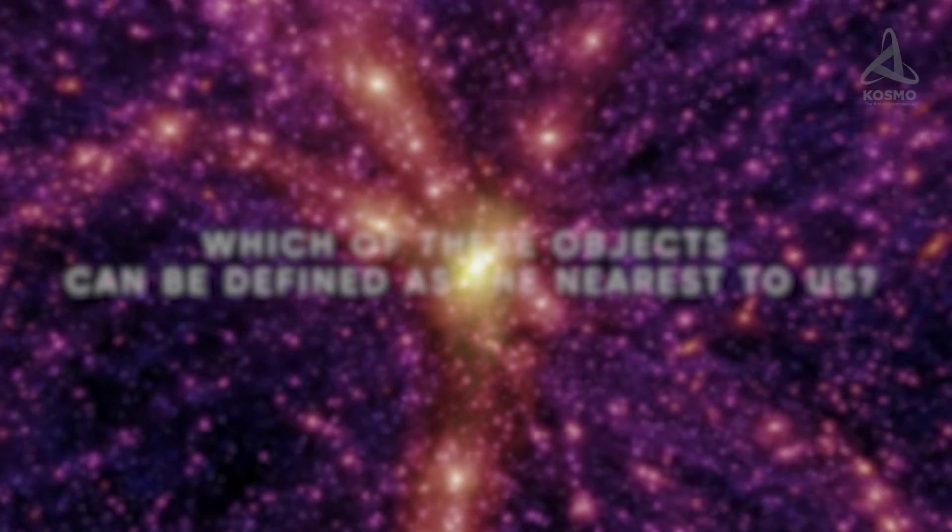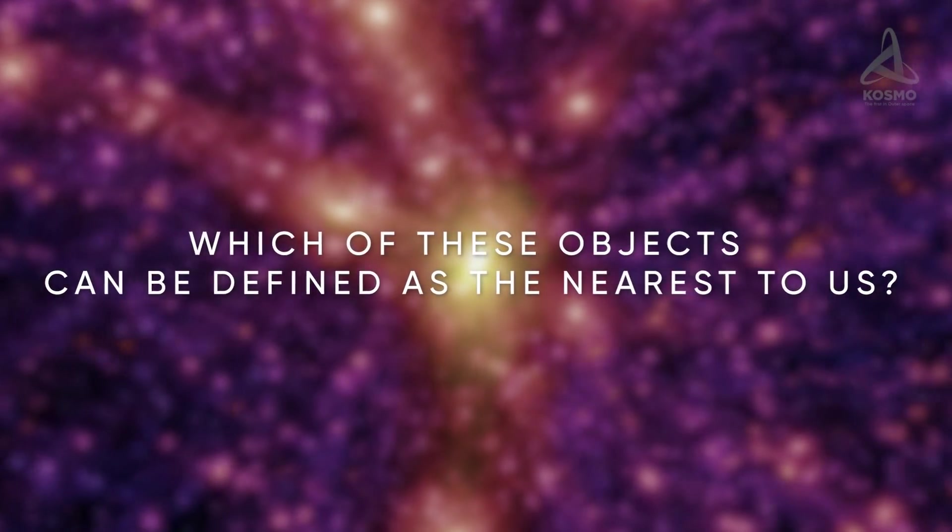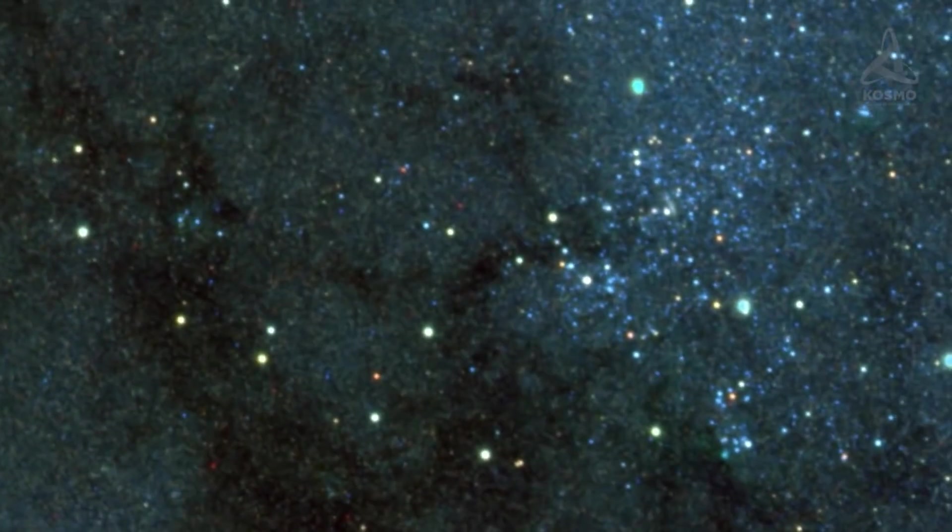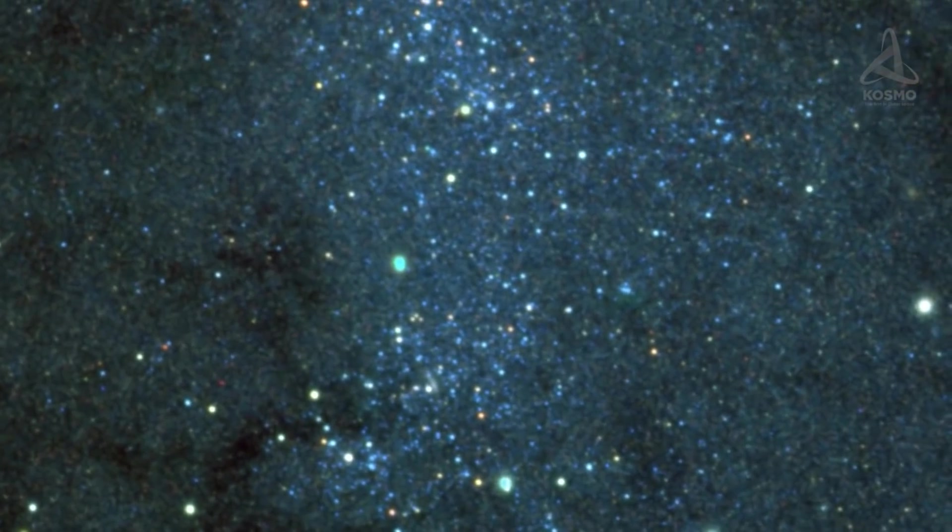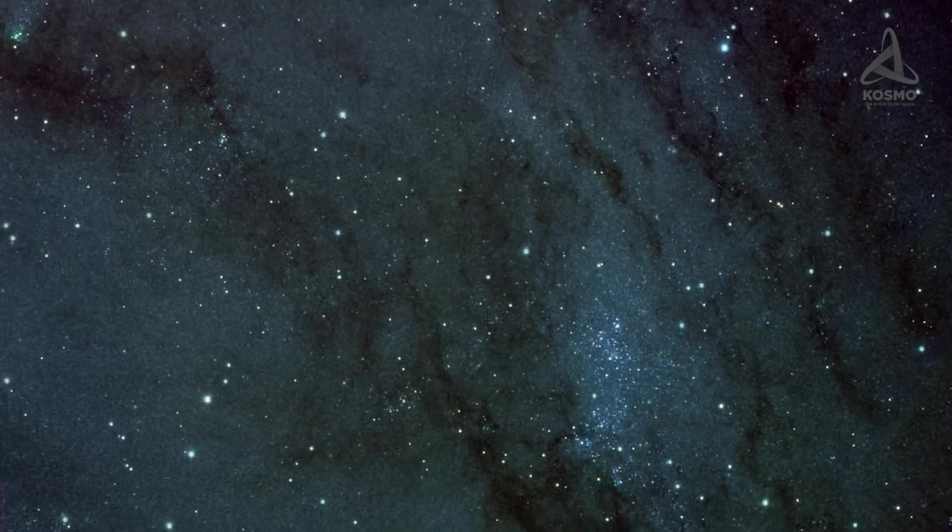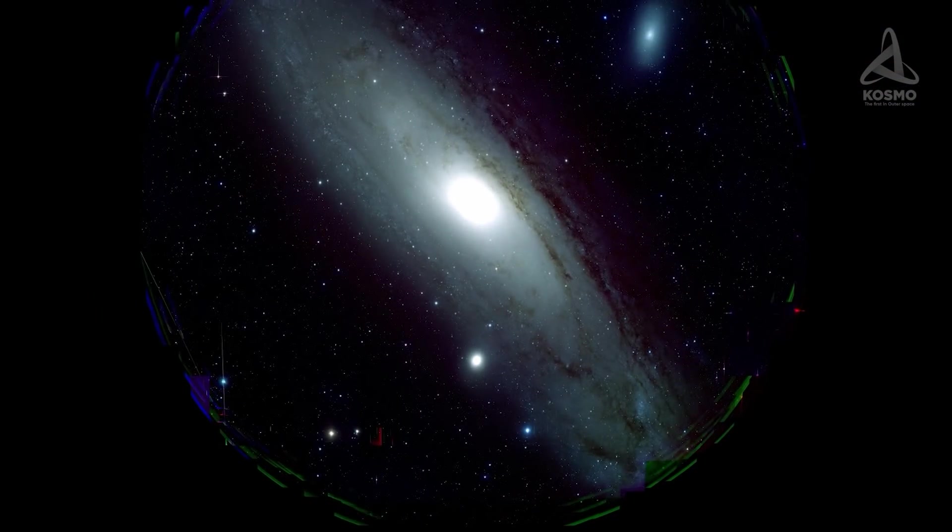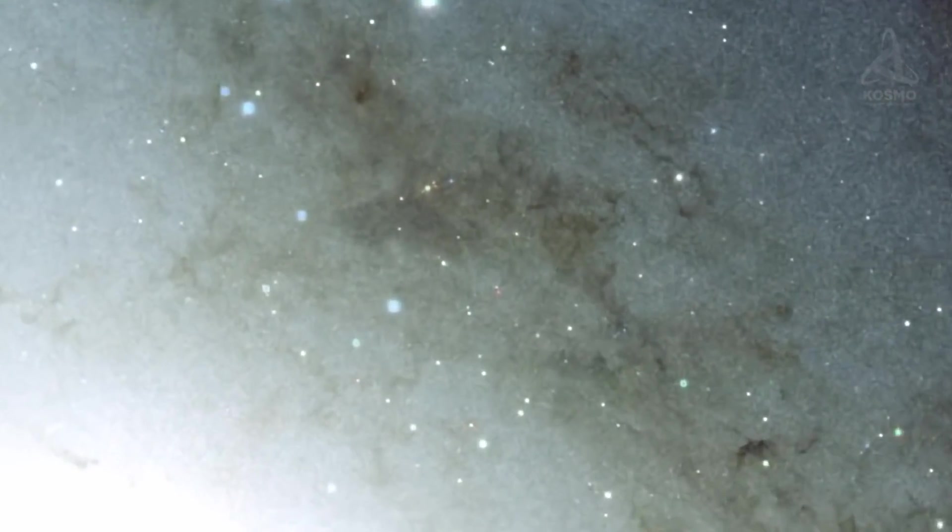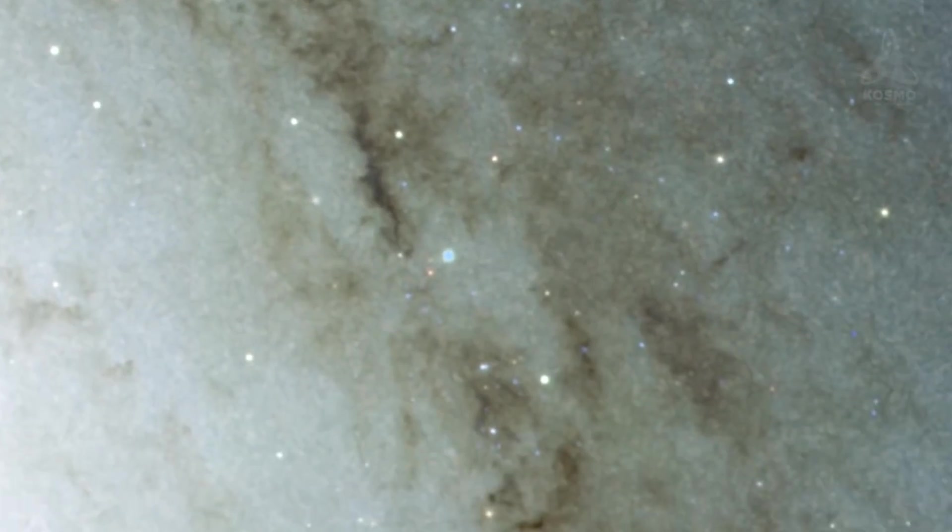But which of these objects can be defined as the nearest to us? Many would argue that it is the Andromeda galaxy that is the closest, which is located 2.52 million light-years away. However, this is the closest object among the largest spiral galaxies.